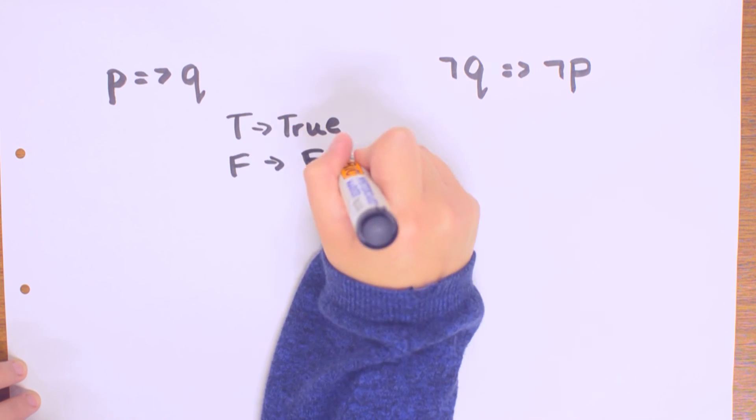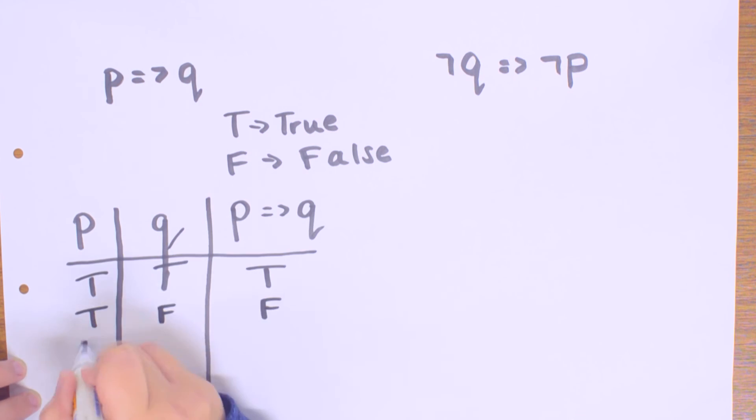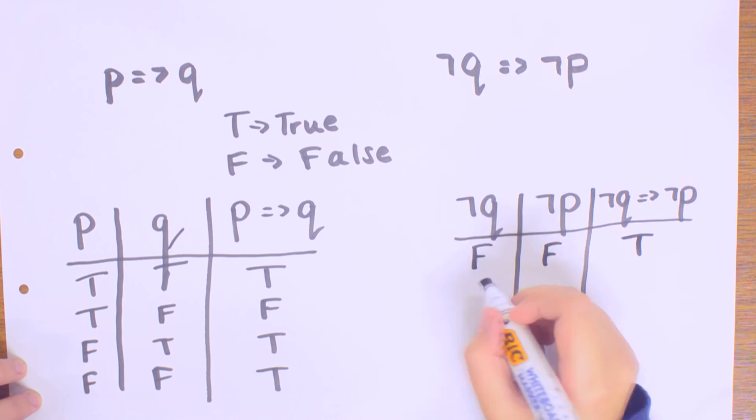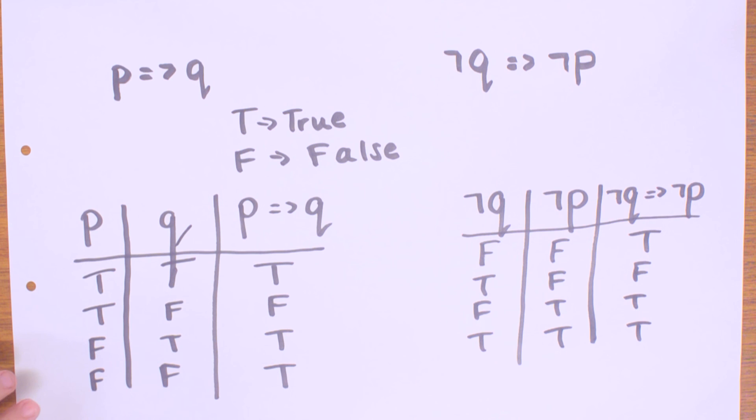To show what we mean, let's draw the truth tables for P implies Q and not Q implies not P. We try out all possible combinations of true and false. As you can see, they're the same.